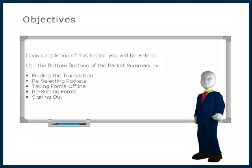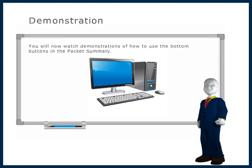Upon completion of this lesson you will be able to use the bottom buttons of the packet summary by finding the transaction, re-selecting packets, taking forms offline, re-sorting forms, and signing out. You will now watch demonstrations of how to use the bottom buttons in the packet summary.